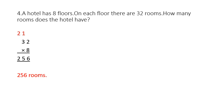Next question, Question 4. A hotel has 8 floors. On each floor there are 32 rooms. How many rooms does the hotel have? Children, in this question there are 8 floors and on each floor there are 32 rooms. Here you have to find out the total number of rooms in 8 floors. We will multiply 32 by 8.